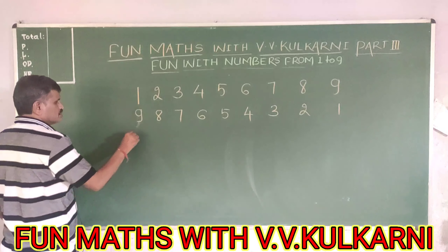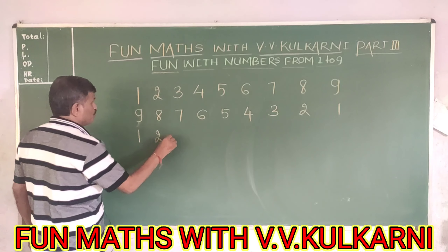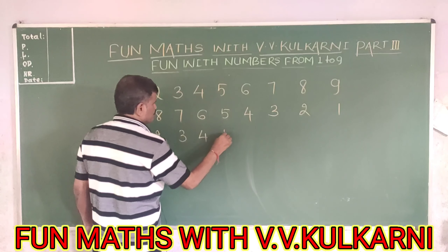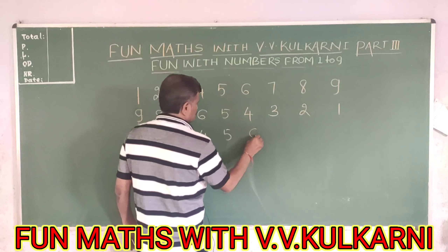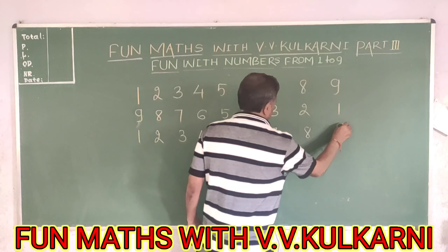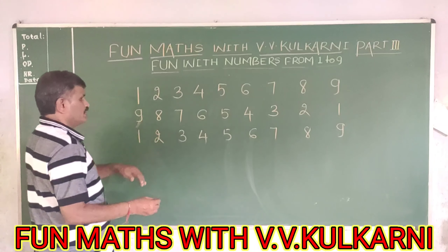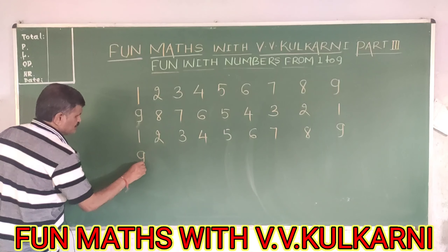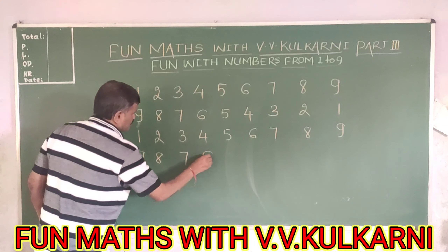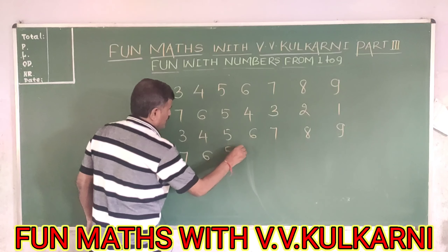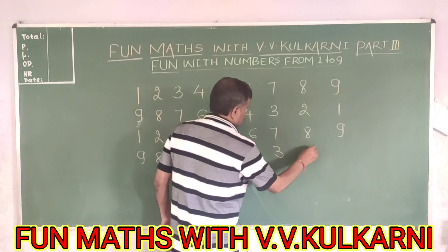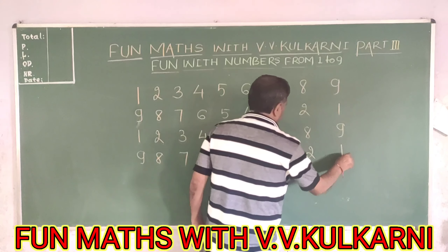Once again: 1, 2, 3, 4, 5, 6, 7, 8, 9. Then again in reverse order: 9, 8, 7, 6, 5, 4, 3, 2, 1.